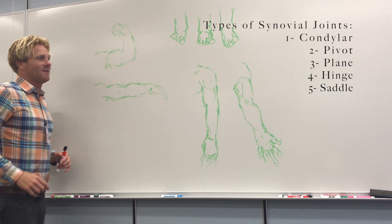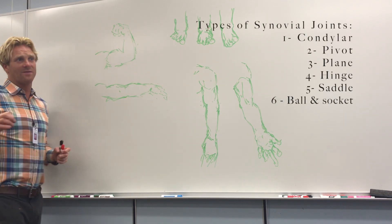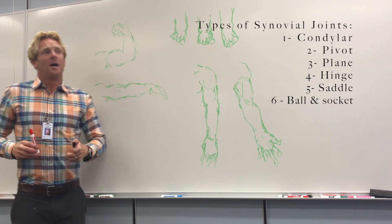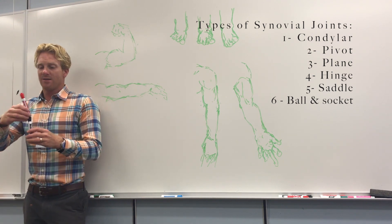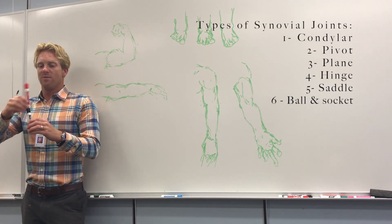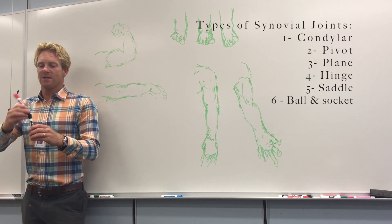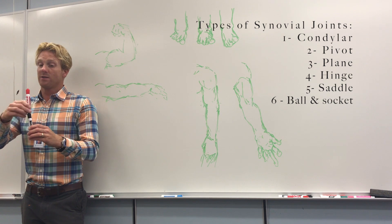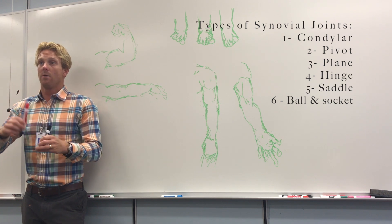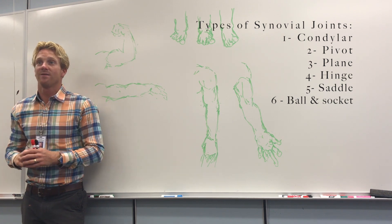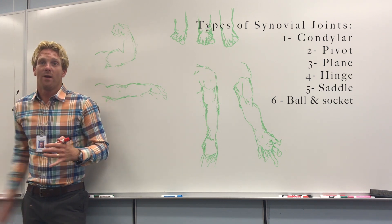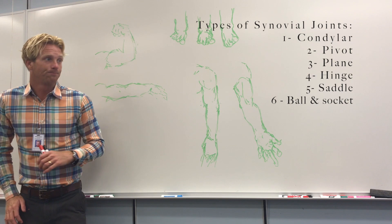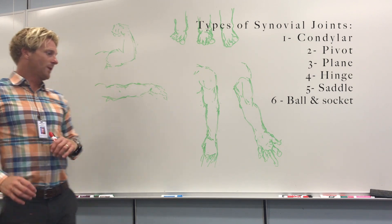Last, we have a ball and socket joint. This is our most flexible synovial joint — it allows the bones to move in any direction and also spin. Great examples are your shoulder and your hip joints.